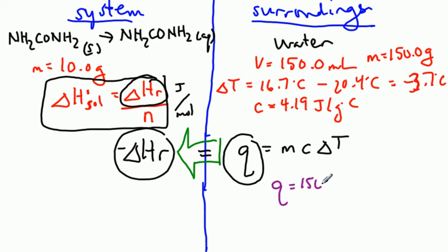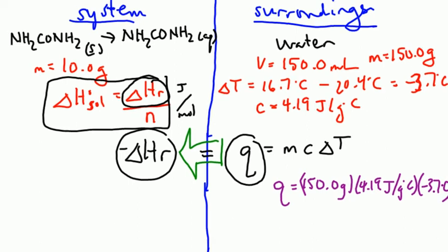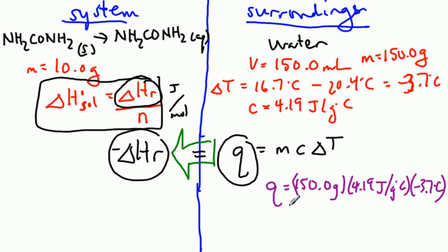So Q is going to be 150 grams times 4.19 joules per gram degrees Celsius times minus 3.7 degrees Celsius. And what do we get for that value? Negative 2,325 joules. Keeping in mind significant digits, we only have a couple over here. So we've only got a couple in this answer. But I'm going to leave it for now and not round it. So if this is our Q value, if the water is losing, because it's a negative sign, 2,325 joules, that means the amount of energy that's being gained by our system will have the same magnitude, but the opposite sign. So delta HR is going to be equal to 2,325 joules, give or take a few.